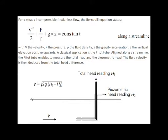For a steady incompressible frictionless flow, the Bernoulli equation states that v squared over 2 plus p over rho plus g z is a constant along a streamline.